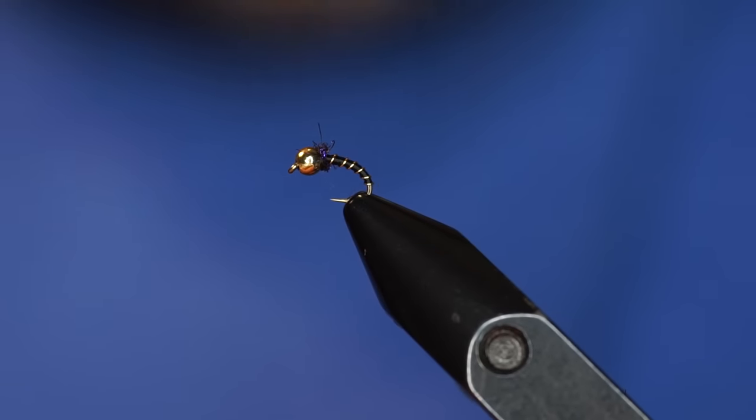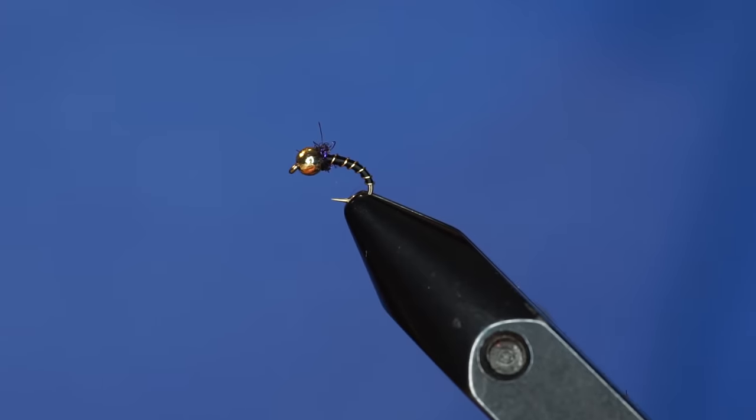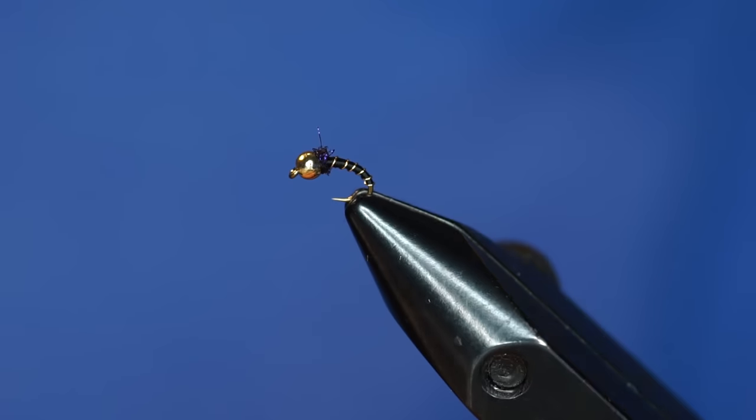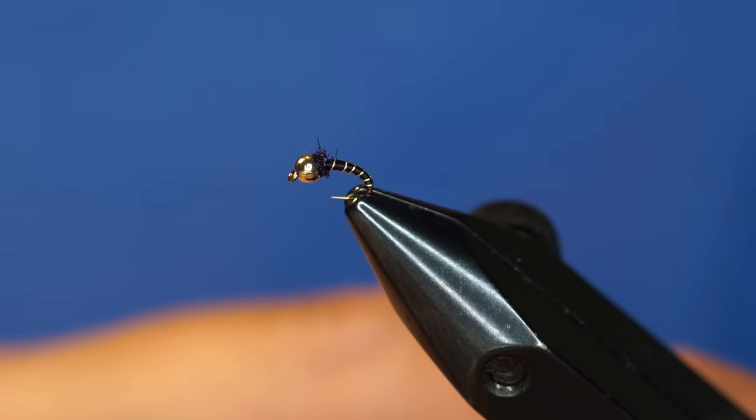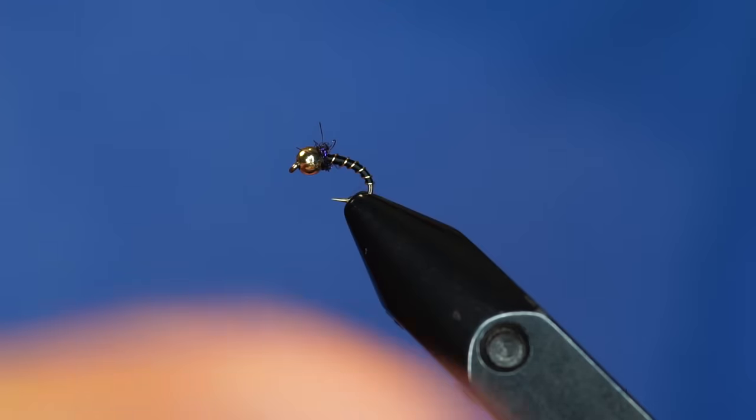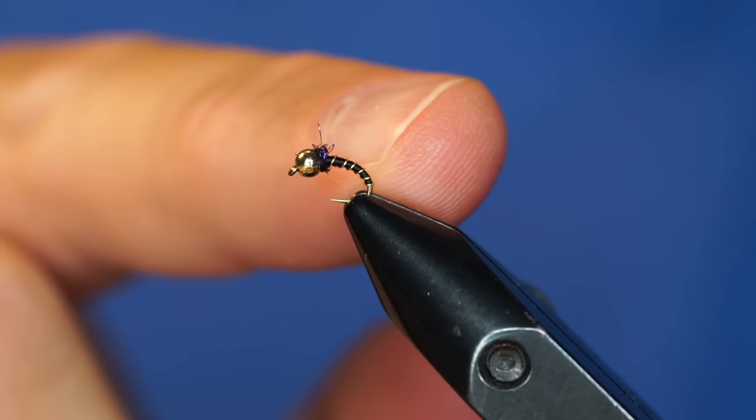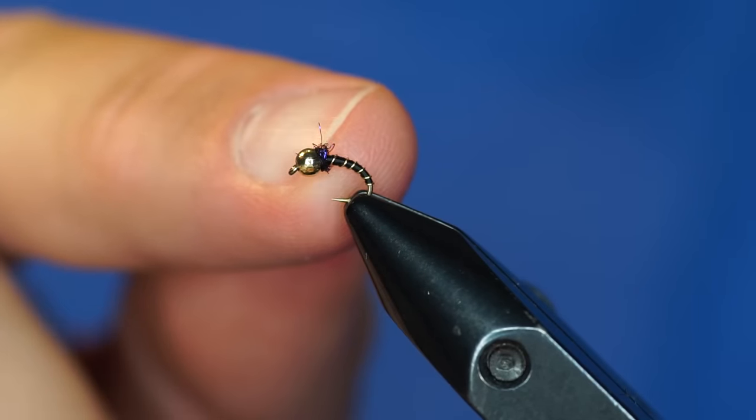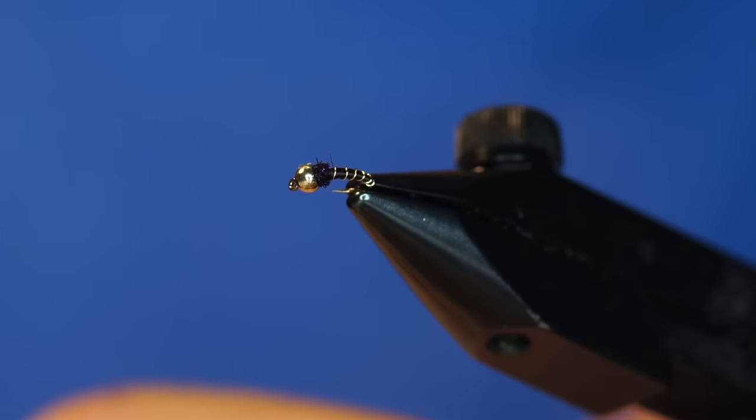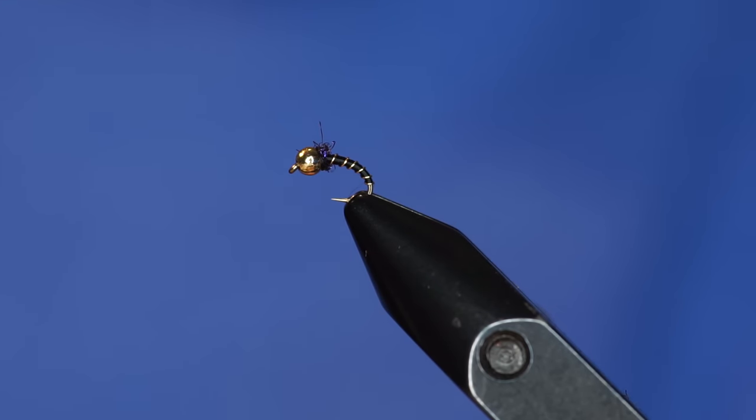Be creative with this. Tie it in a bunch of different sizes, tie it in different colors, try different wire colors. One of the best colors we use is a copper bead, brown thread, and blue wire with brown ice dub. Very simple fly, but it's very, very effective. It's caught basically every species, including marlin and tiger muskie. That might be a lie.